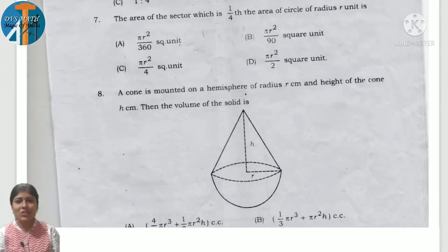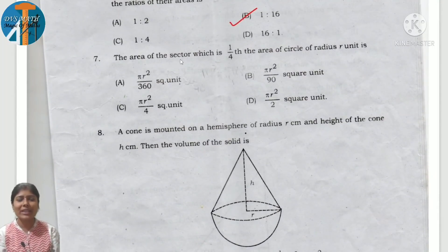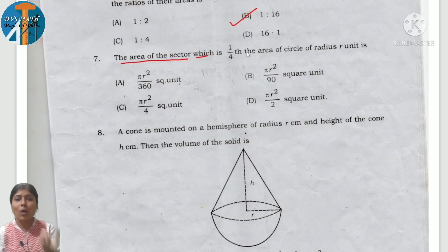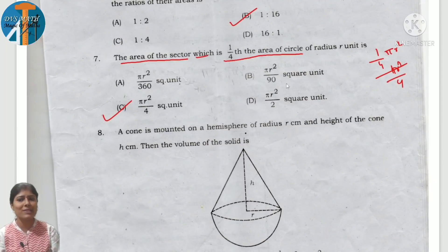Seventh one: the area of sector which is 1 fourth the area of circle. So area of sector formula: 1 fourth times the area of circle, 1 by 4. What is area of circle formula? Pi r square. Pi r square by 4, option C is correct.